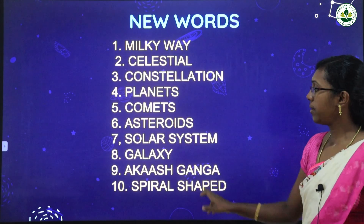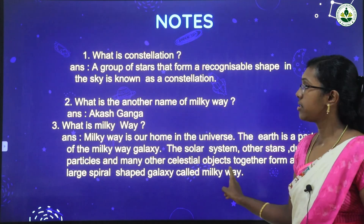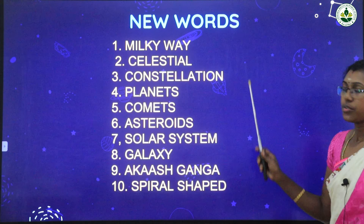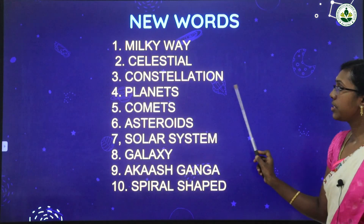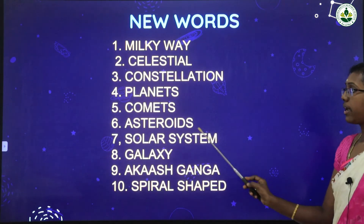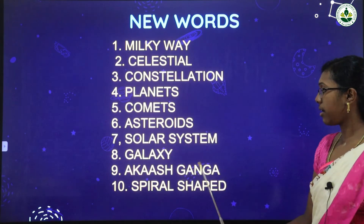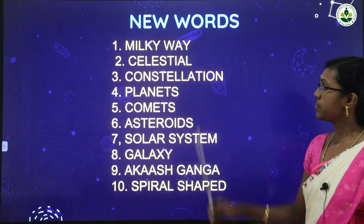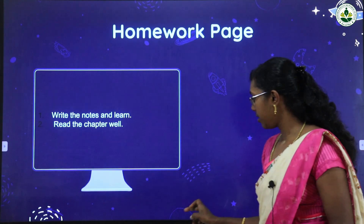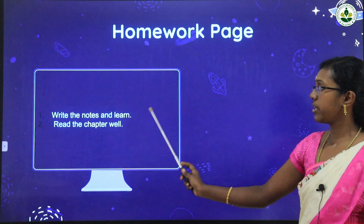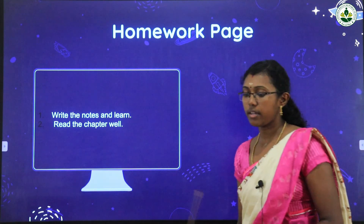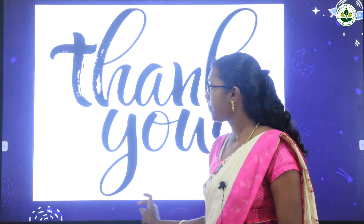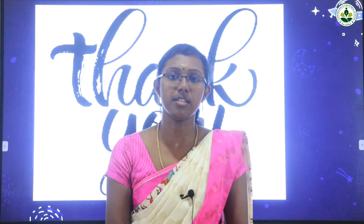Children, write these questions in your notebook and learn them — fill in the blanks and question answers. New words for your dictation: solar, Milky Way, celestial, constellation, planets, comets, asteroids, solar system, galaxy, Akash Ganga, spiral-shaped. Learn the spellings of all new words. Your homework is to write the notes, fill in the blanks, and question answers in your notebook and read the chapter well. We will see the remaining part in the next class.